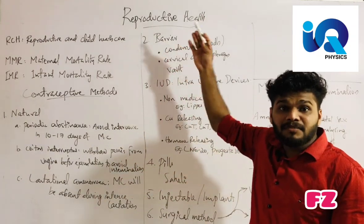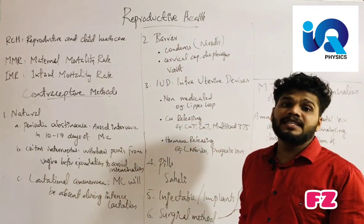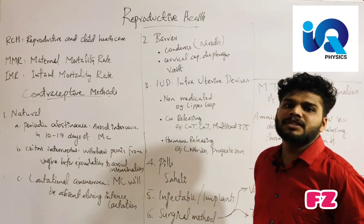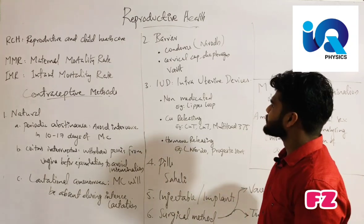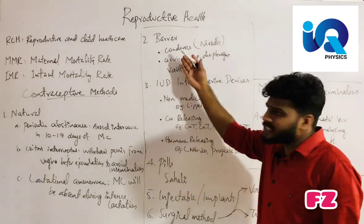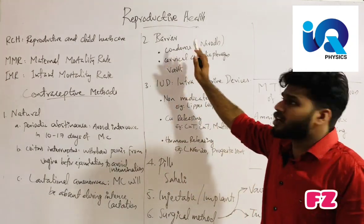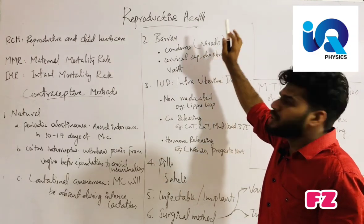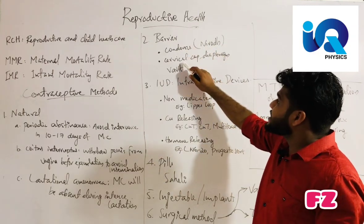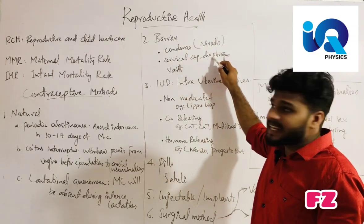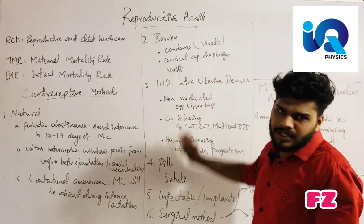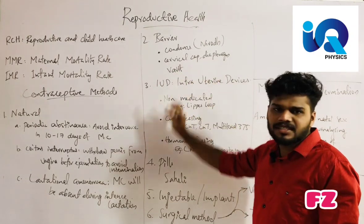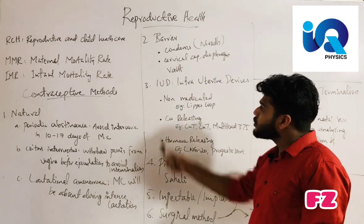The next type is the barrier method, which uses a physical barrier. Examples include condoms, cervical caps, and diaphragms. These are used by both males and females.